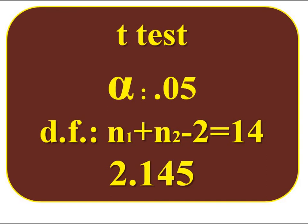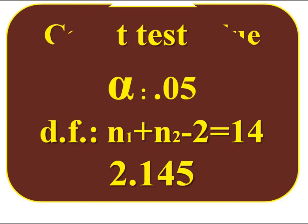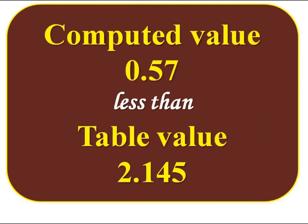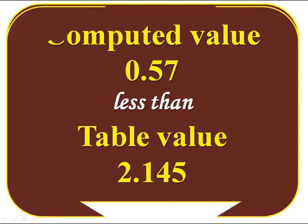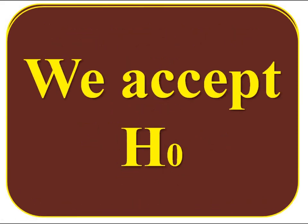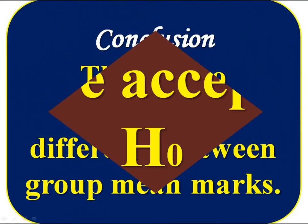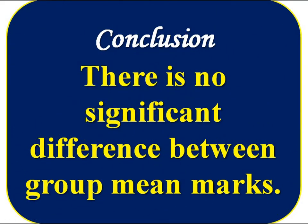Then compare the table value with the computed value. Our computed value is 0.57 and table value is 2.145. We can see the computed value is less than the table value. Therefore, it falls in the acceptance region. Hence, we accept the null hypothesis. Our conclusion: there is no significant difference between group mean marks at the 5% level of significance. Thank you.